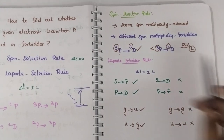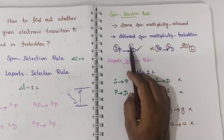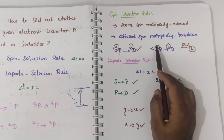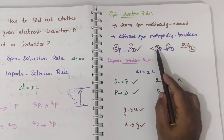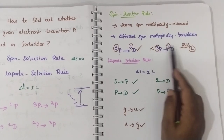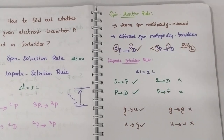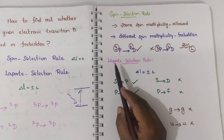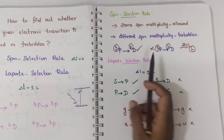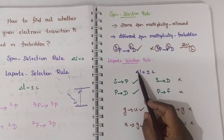To summarize the spin selection rule: if you have a triplet here, this should also be triplet. If you have a doublet, this should also be doublet. If you have different spin multiplicity, then the particular transition will be forbidden.